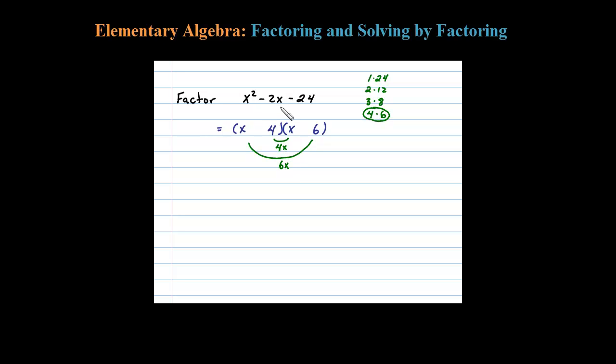4x and 6x adds up to negative 2x if the 6 is negative and the 4 is positive. Plus 4x minus 6x is negative 2x. So that tells me the 6 better be negative and the 4 better be positive.